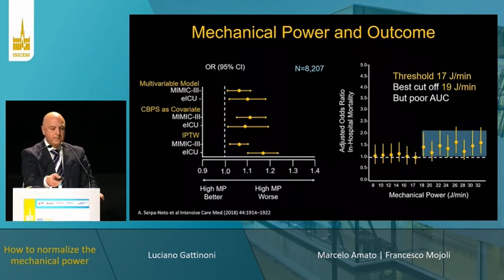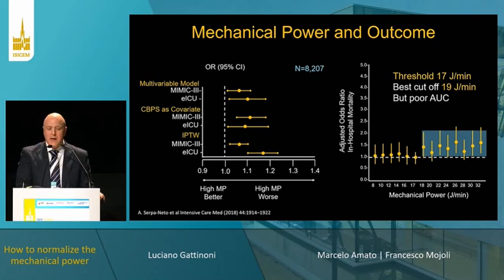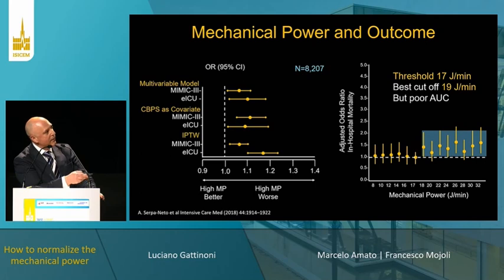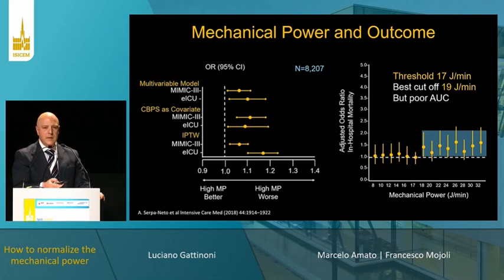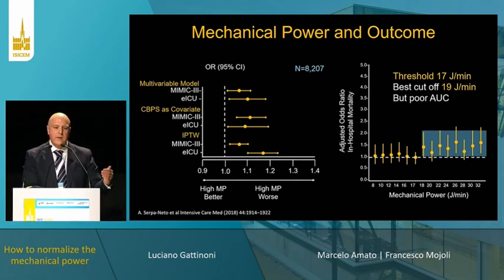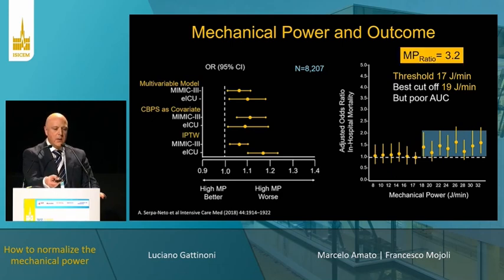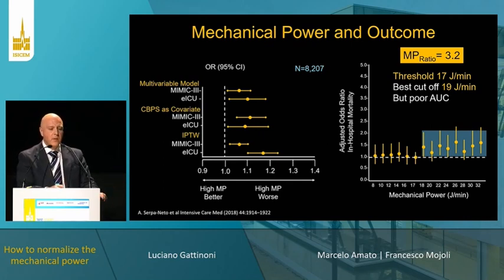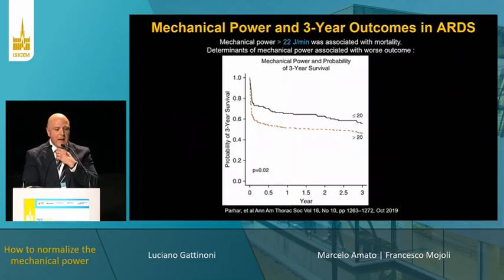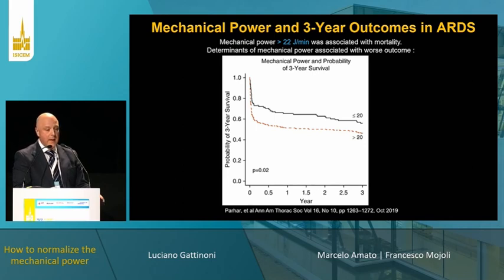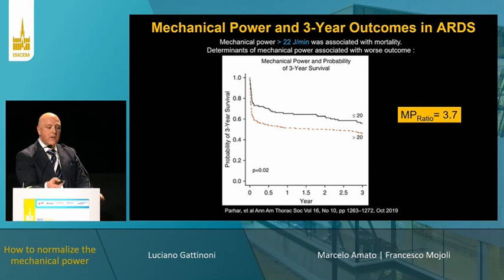Going back to epidemiological studies on conventional ventilation, from large databases including MIMIC-3, high mechanical power has been associated with increased mortality. The threshold for increased mortality was about 19 joules per minute, which corresponds to a mechanical power ratio of about 3 to 3.2. Another study looking at mechanical power and three-year outcome in ARDS found the best threshold was about 22 joules per minute, corresponding to a mechanical power ratio of about 3.7 — close to 4.